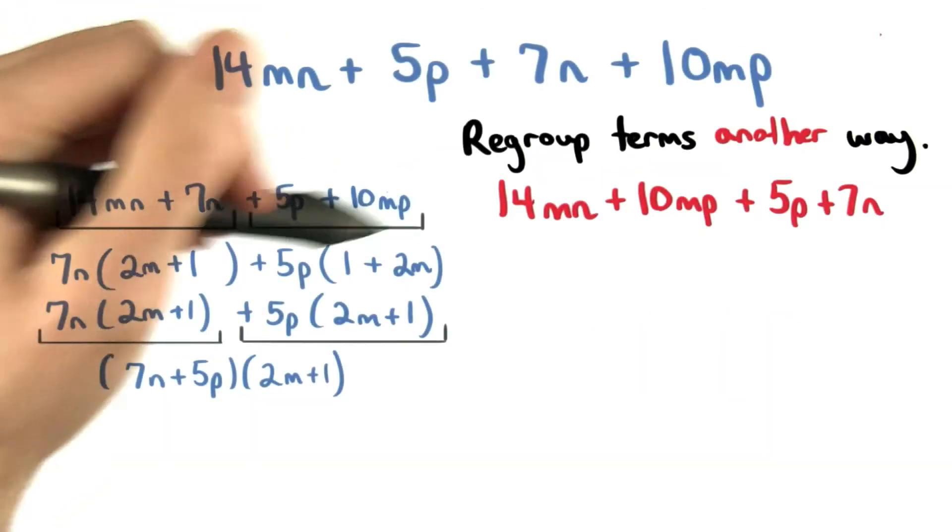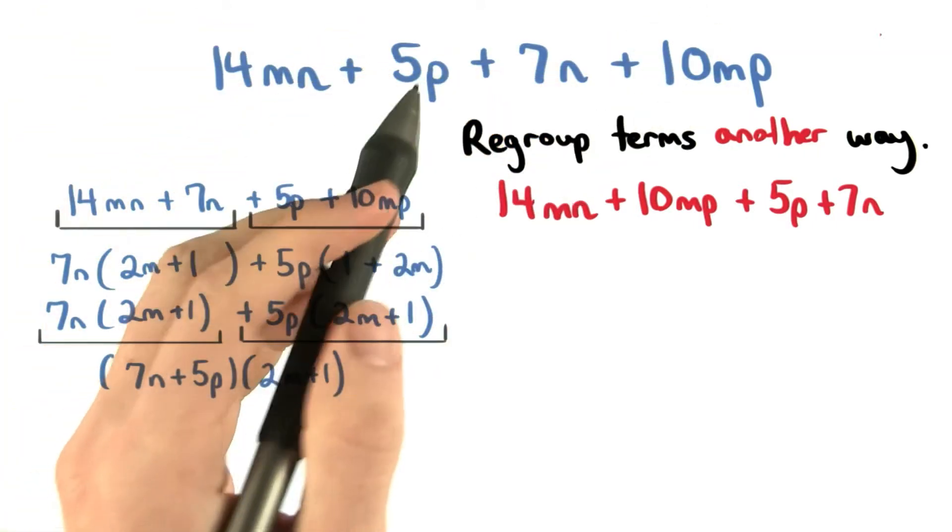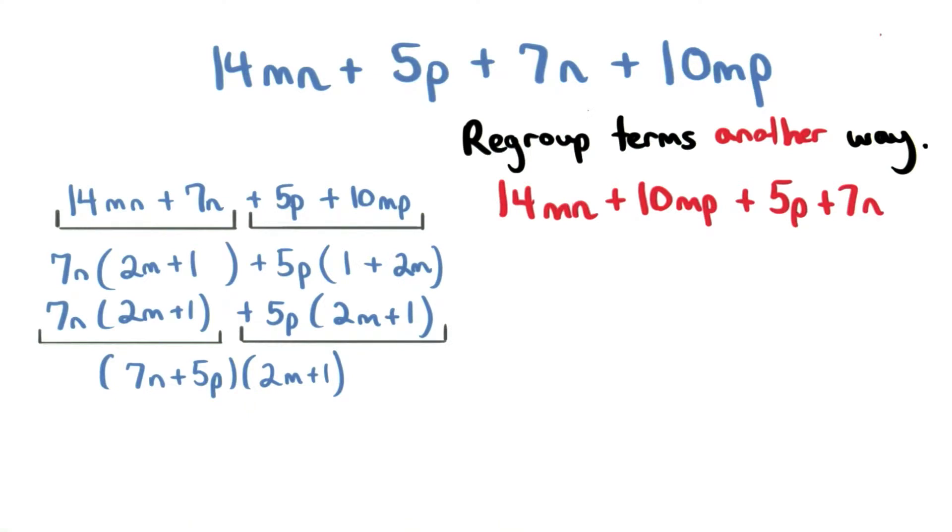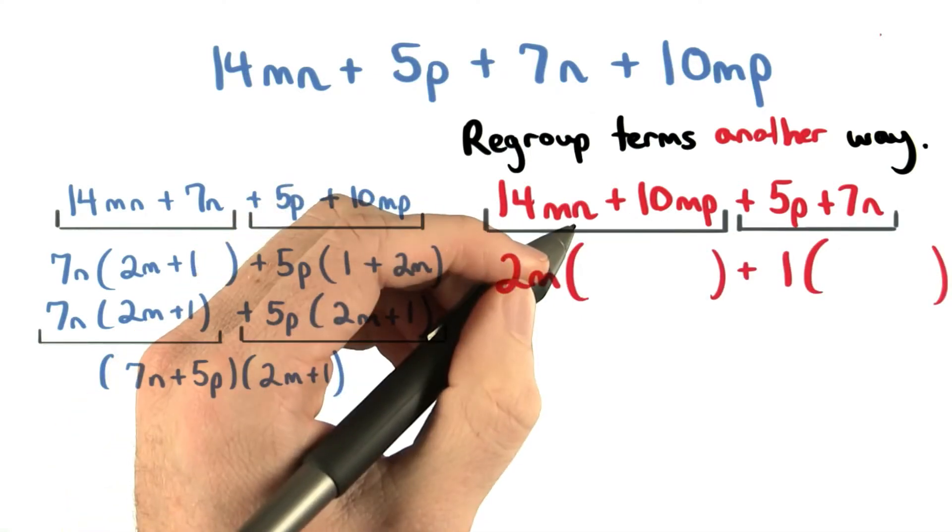But we could have regrouped the terms in another way. I could have grouped this first term and this last term together, and then kept the middle two terms together as well. If we factor a 2m from these first two terms, we'll be left with 7n plus 5p.